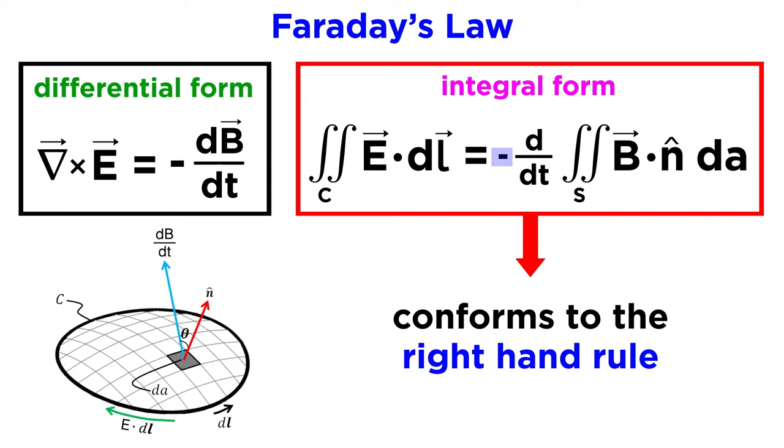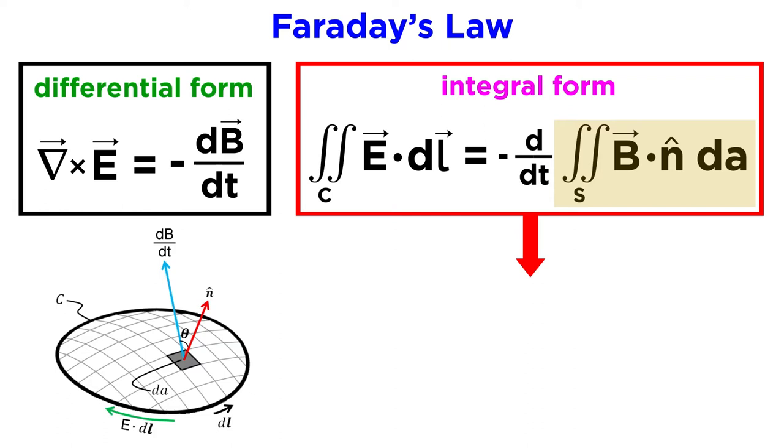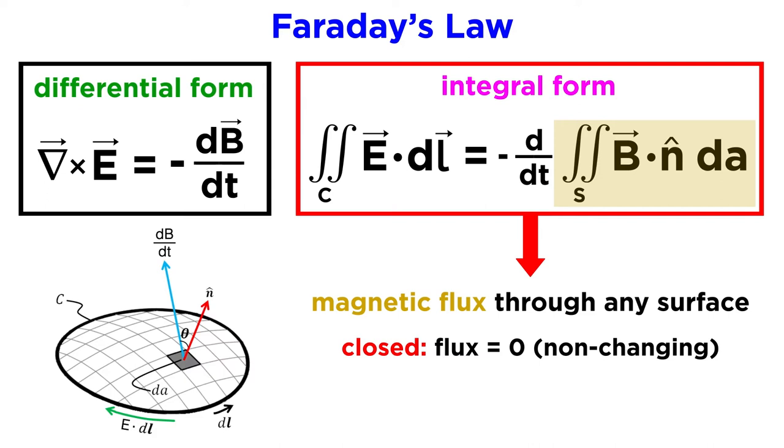Then on the right the negative sign is to conform to the right hand rule. The surface integral is essentially the same as that from Gauss's law, but with one key difference. It's the magnetic flux through any surface, open or closed.